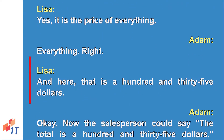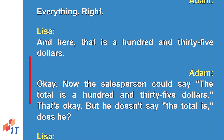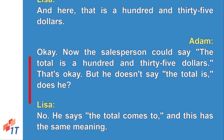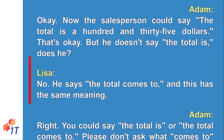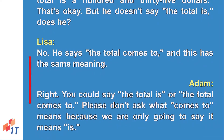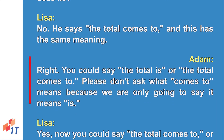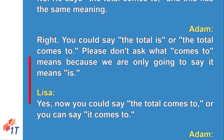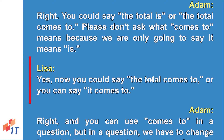The salesperson could say 'the total is 135 dollars' — that's okay — but he says 'the total comes to,' which has the same meaning. You could say 'the total is' or 'the total comes to.' Please don't ask what 'comes to' means because we are only going to say it means 'is.'